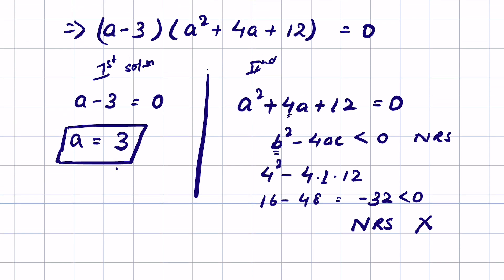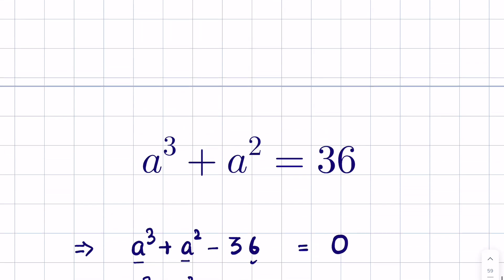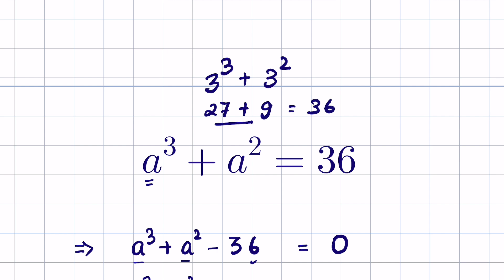Our answer is a is equal to 3. We can check this solution — put the value of a: 3 cube plus 3 square equals 27 plus 9, which equals 36. LHS is equal to RHS, hence our answer is correct.